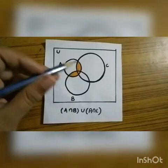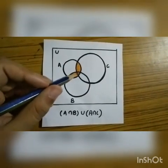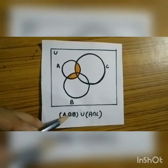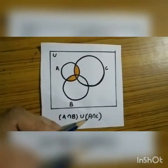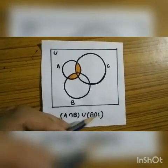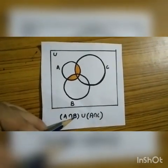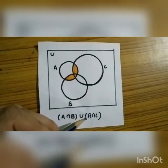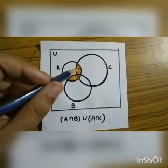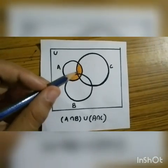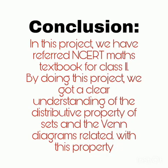In this Venn diagram, this region represents A intersection B, whereas this region represents A intersection C. So (A intersection B) union (A intersection C) is represented by this portion which is in the orange color.